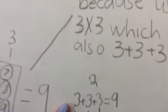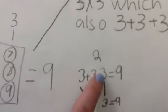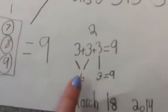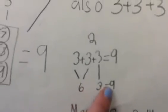This is our third strategy. 3 plus 3 plus 3 equals 9. 6 plus 3 equals 9.